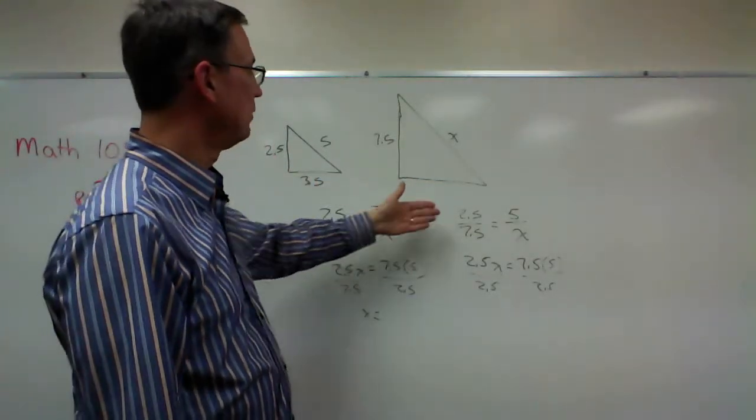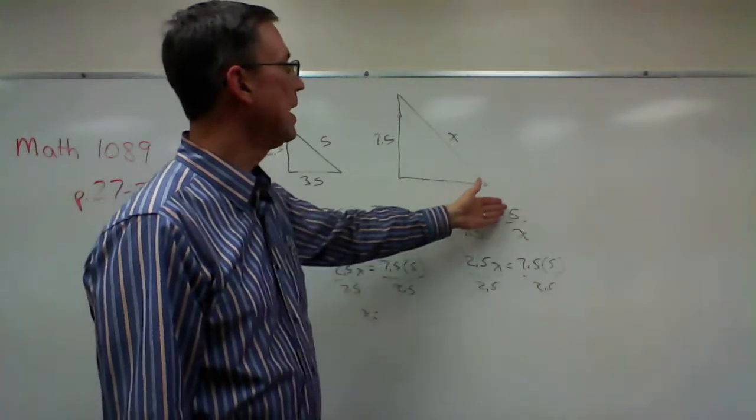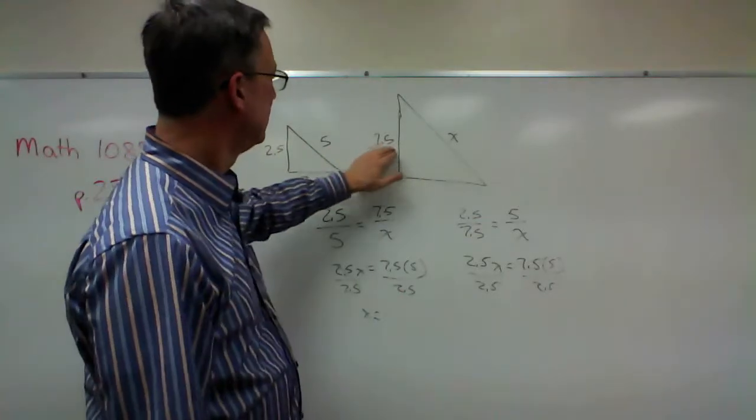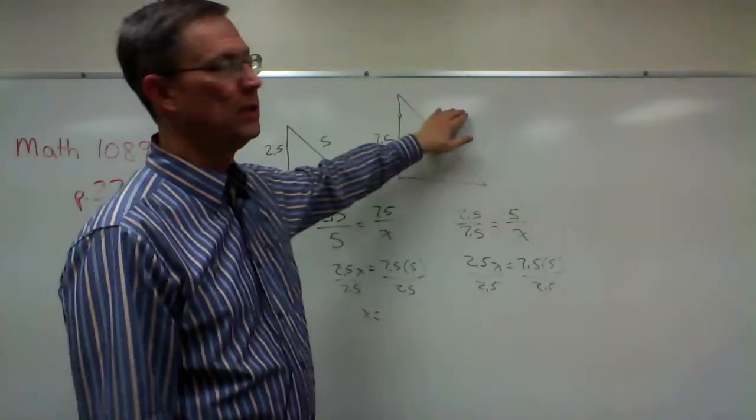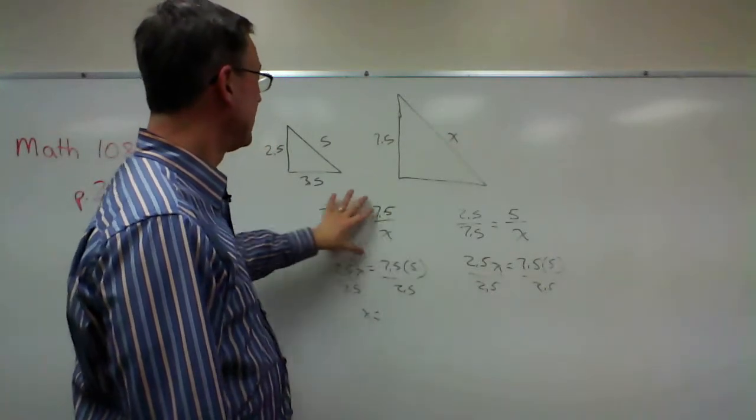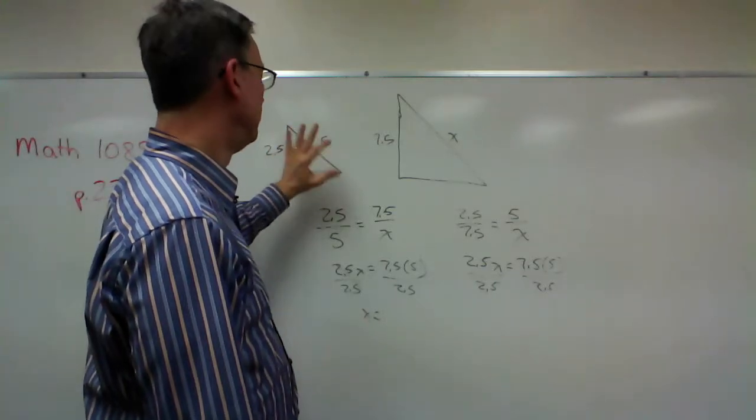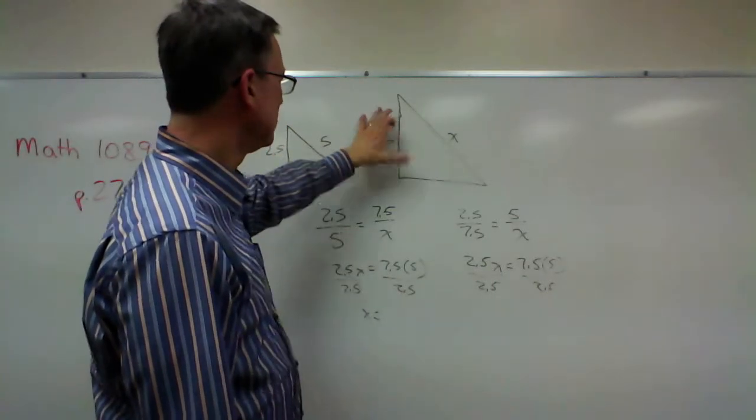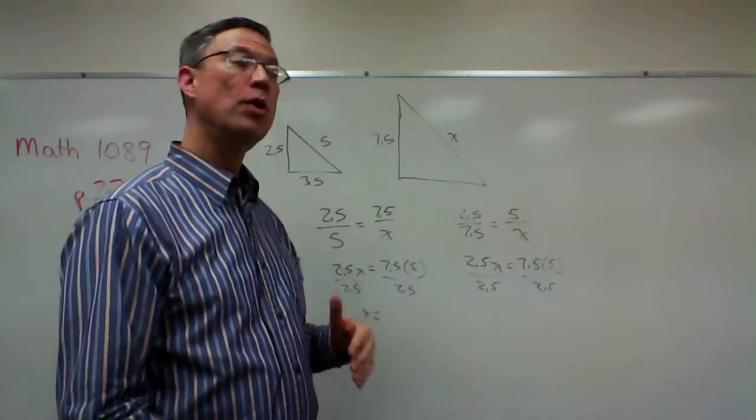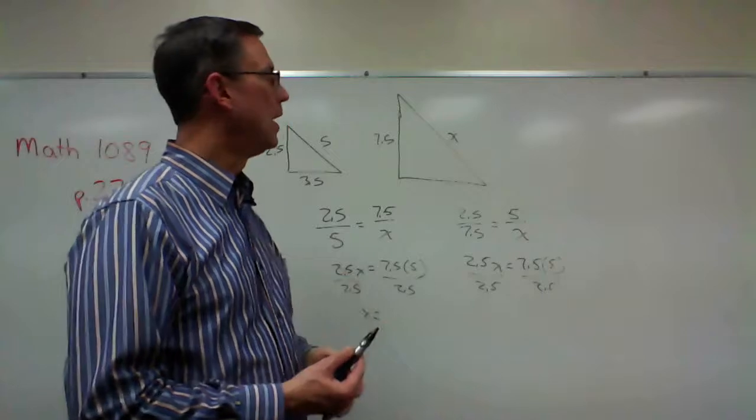I don't say 2.5 is to 7.5 as x is to 5. I can't do that. I have to do this is to this as this is to this, a little rhythm going with ratios. When I set it up this way, I'm saying the short side is to the long side in this triangle as the short side is to the long side in this triangle. So there are two different ways you could solve it and still get the correct answer. Just be careful in setting it up.